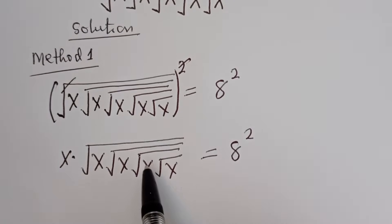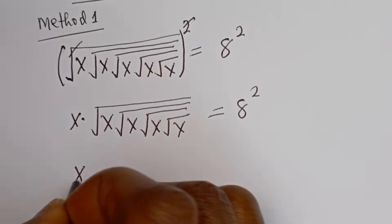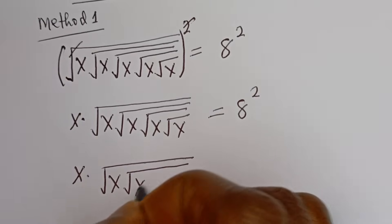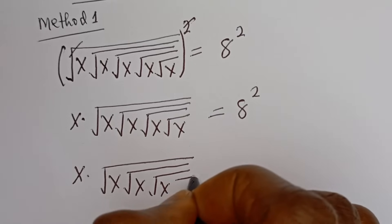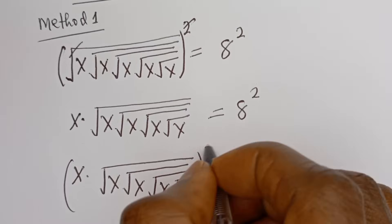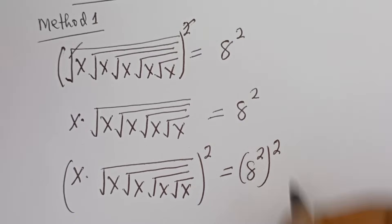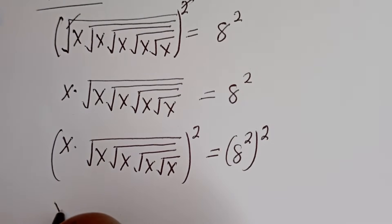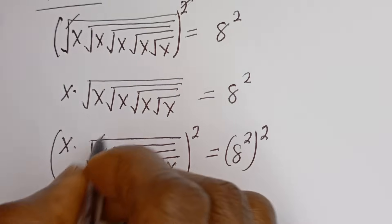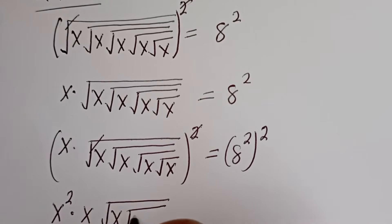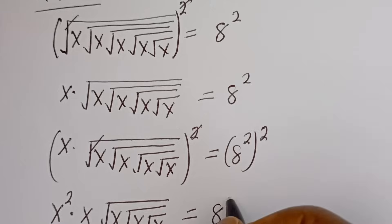Now let's square both sides of this equation again. We have S times square root of S, square root of S, square root of S, square root of S — all squared — is equal to H squared, squared. Then this gives S squared, and we cancel the outer radical, multiplied by S, then square root of S, square root of S, square root of S is equal to H to the power of 4.